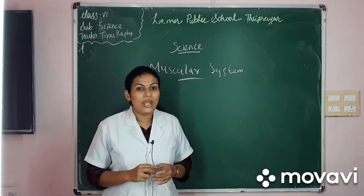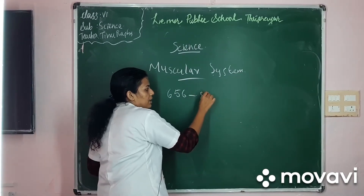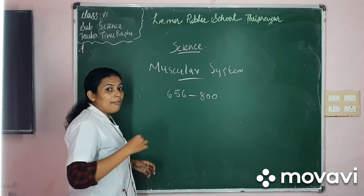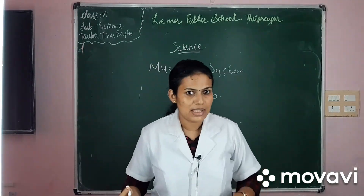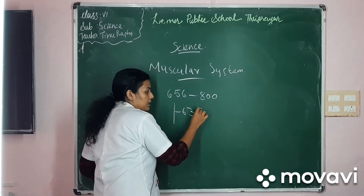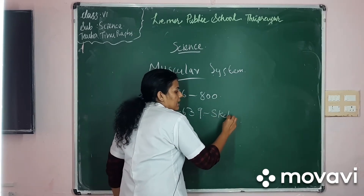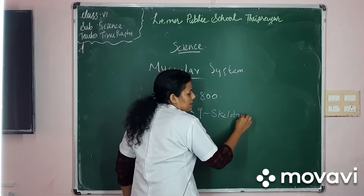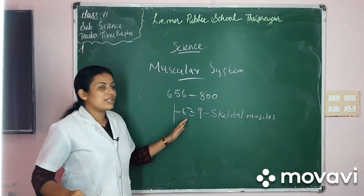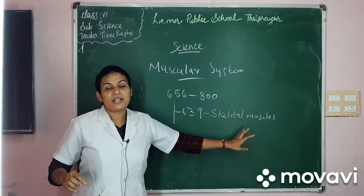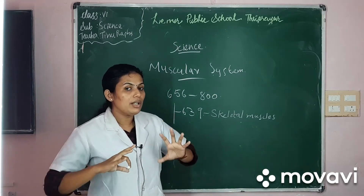The number of muscles in our body varies from 656 to 800. Among these, almost 639 are skeletal muscles, and each skeletal muscle is responsible for a particular movement.